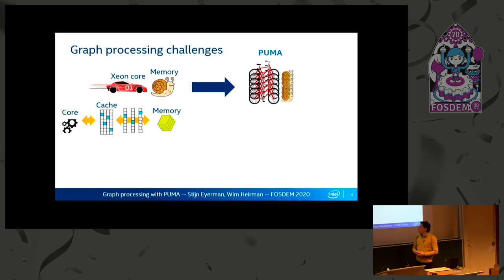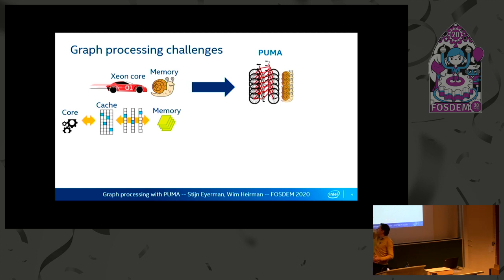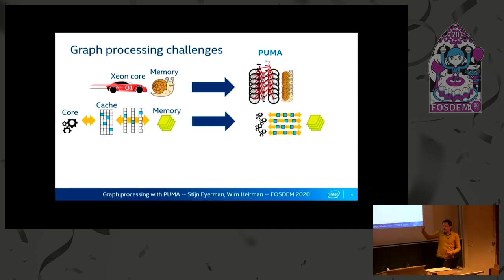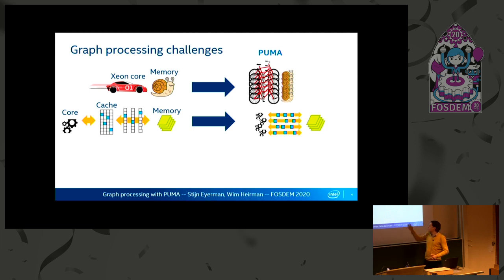Caching was a problem. If you load data, you only need that one element, not the full cache line. In a conventional architecture, you load the full cache line from memory through the memory bus into the cache and then to the core, but only the scattered individual points are actually used — it's very inefficient use of cache capacity and memory bandwidth. For PUMA, we optimize memory accesses such that you can access only a single element, and we bypass caches to get more chip area for cores and get more fluent flow of memory operations.